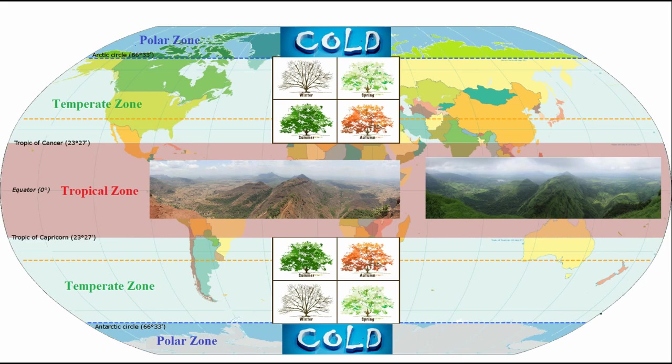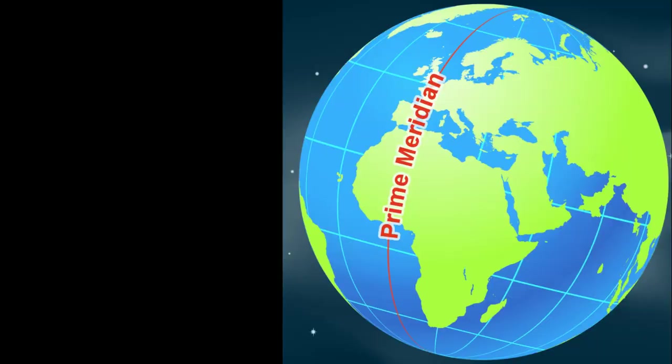First up is the up-and-down version of the equator, the prime meridian. This line is different from the equator in a couple of big ways. First, it only goes halfway around the world, starting up at the North Pole and stopping at the South Pole.